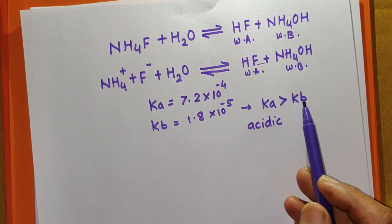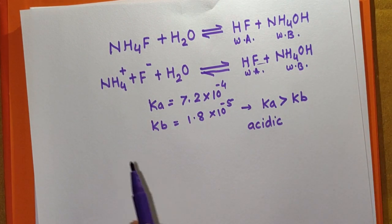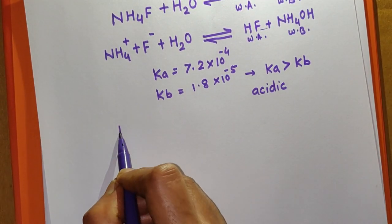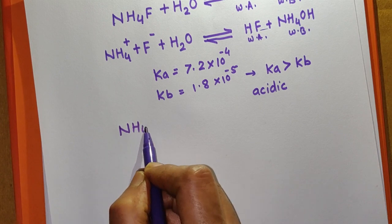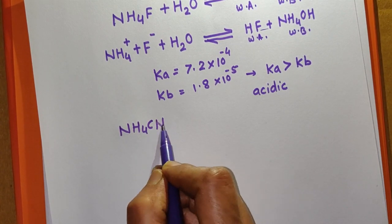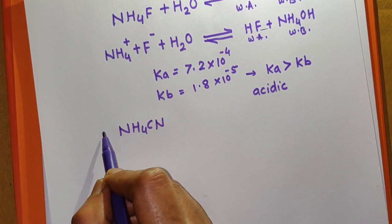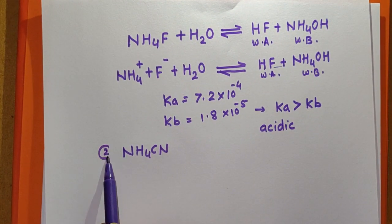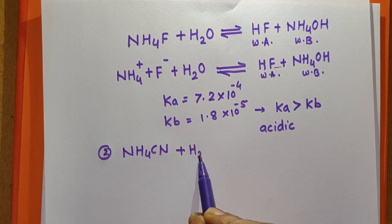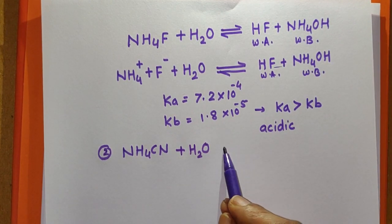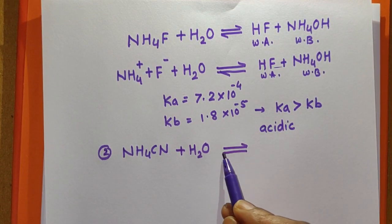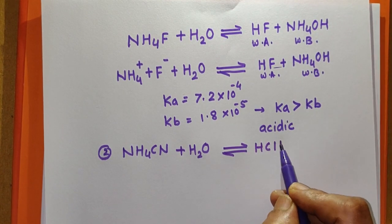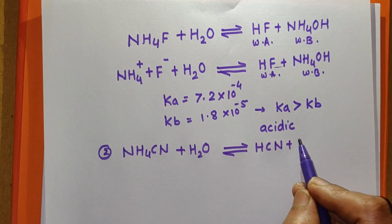The second example of a salt of weak acid and weak base is NH₄CN, ammonium cyanide. When NH₄CN reacts with water, the hydrolysis reaction gives acid HCN plus base NH₄OH. So NH₄CN is a salt of weak acid HCN and weak base NH₄OH.